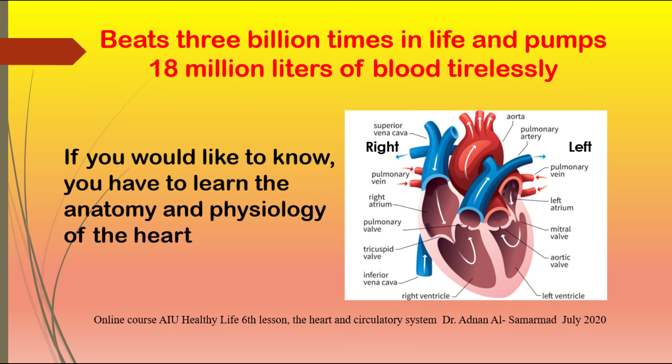In the lungs, the blood is saturated with oxygen and reaches the heart via four large pulmonary veins, two from each lung, to fill the left atrium. The blood then goes to fill the left ventricle through the mitral valve, also called the bicuspid valve, by contractions of the atrium.